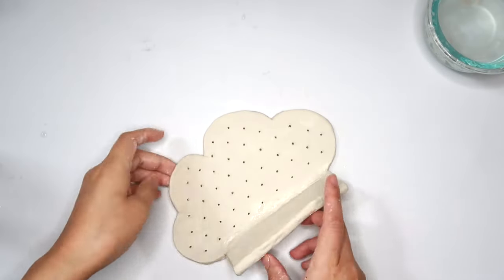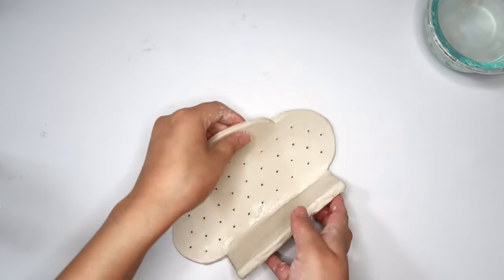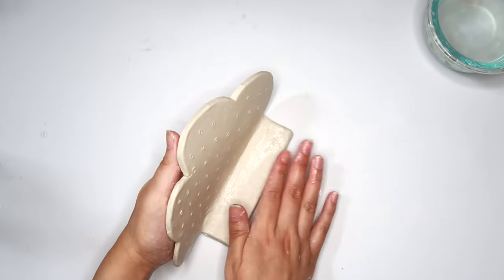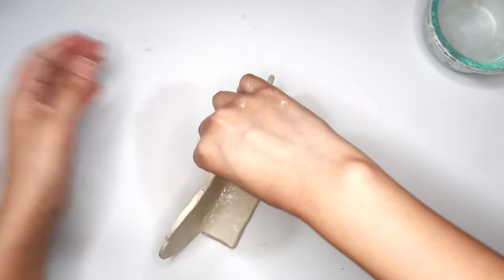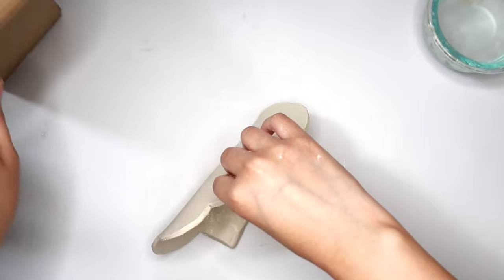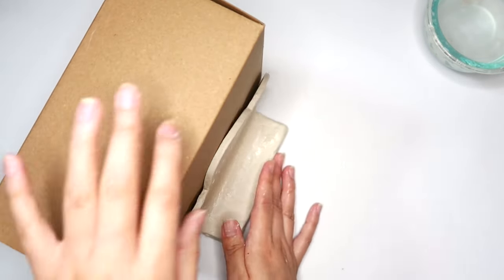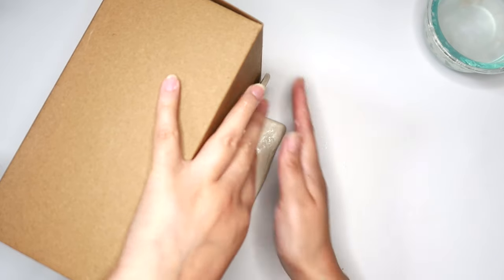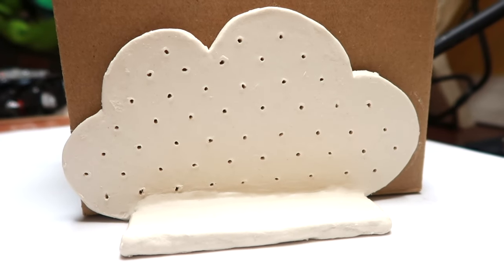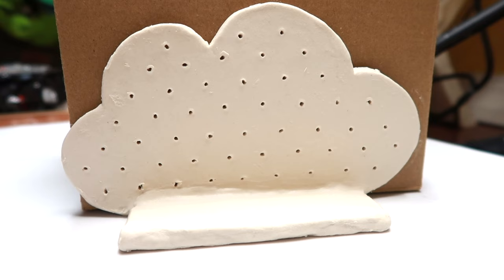I flipped my cloud back over to the front, and then I'm just going to set it how I want it to dry, so the cloud part is standing up and the flat part is on the bottom. So this is how you want it to look, and then I'm just going to let this dry for a few days.